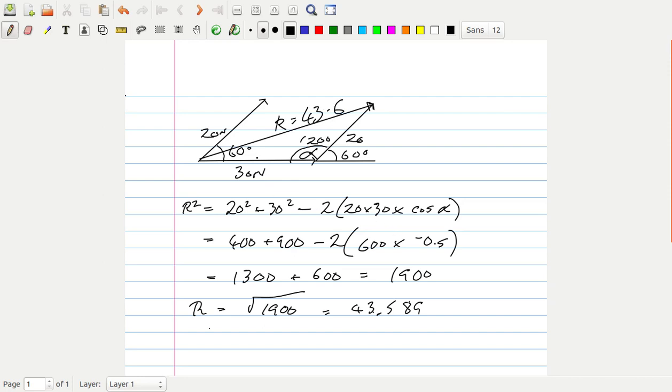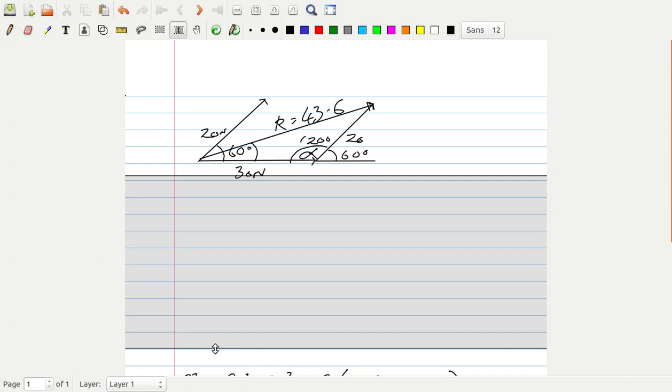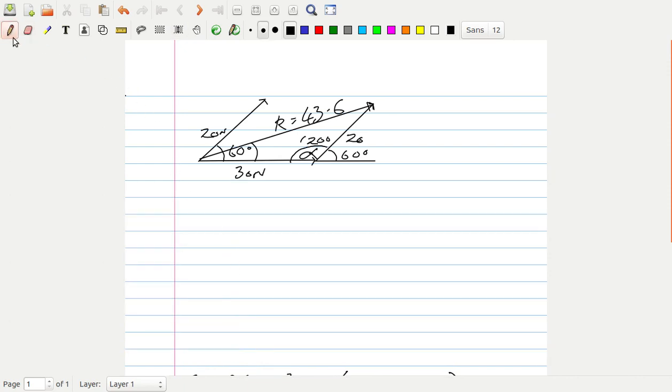So now we just need to know what this angle is, what the angle that R makes to the 30 newton force. So let's just make a little bit of space, and work that out. From the sine rule of triangles, we can say that 43.6 over sine 120 is equal to 20 over sine beta. We'll call this angle beta.